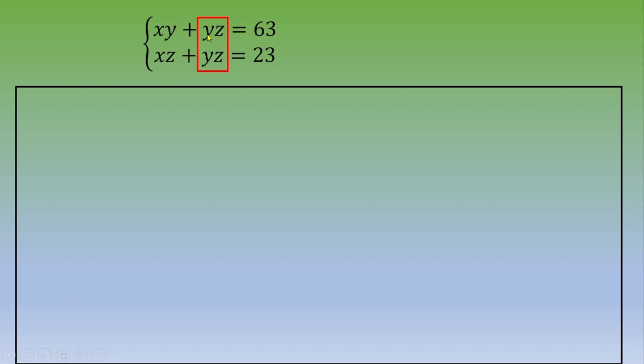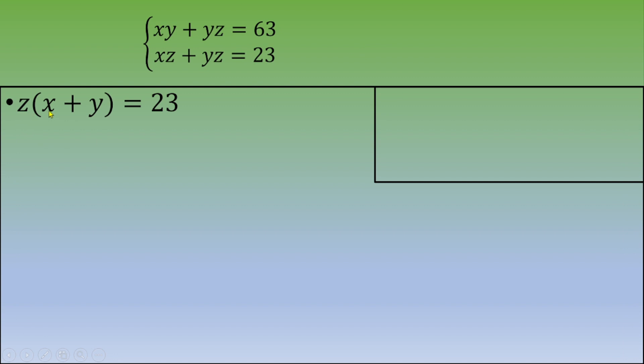If you do that, terms in yz are going to disappear. But think about that 63 minus 23, you're going to end up with 40. And this is much better if you end up with a prime number. So we're not going to do that. Speaking of prime number, we just noted that 23, this is a prime number. And if we look on the left part, we can factor by z. So we are going to do that. So we focus on the second equation. And we end up with z times (x plus y) equals 23. And 23, this is a prime number. So only two possibilities. This is 1 times 23 or 23 times 1.